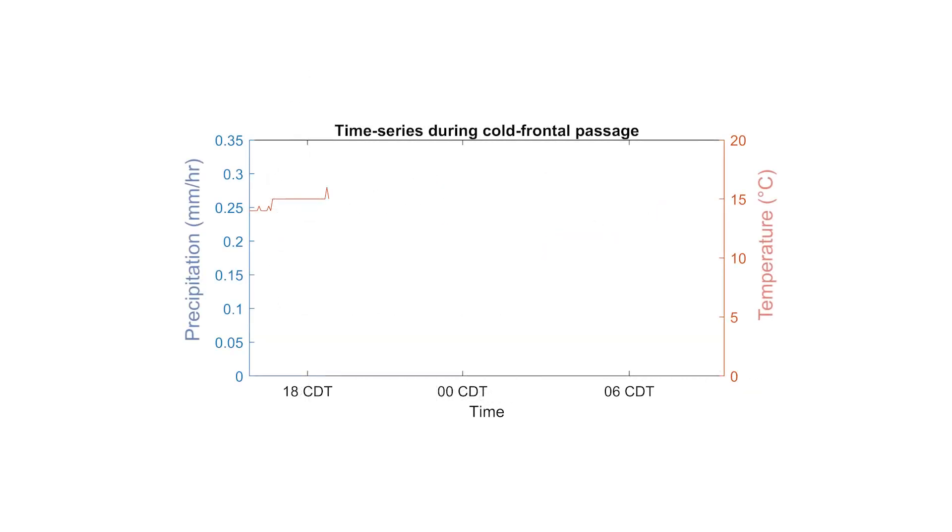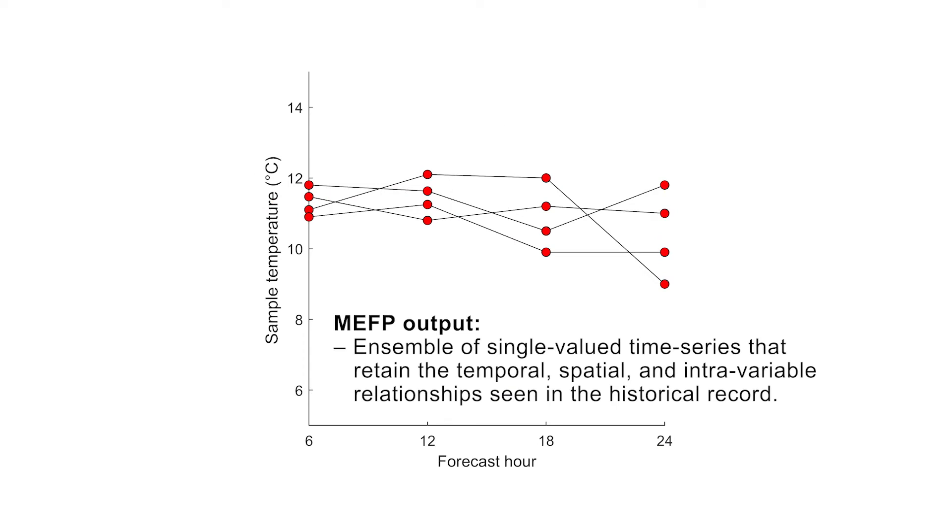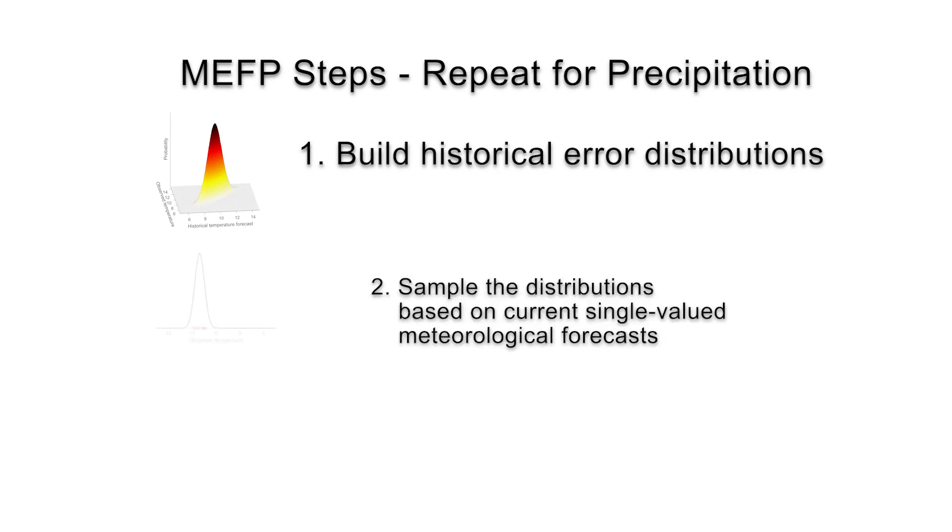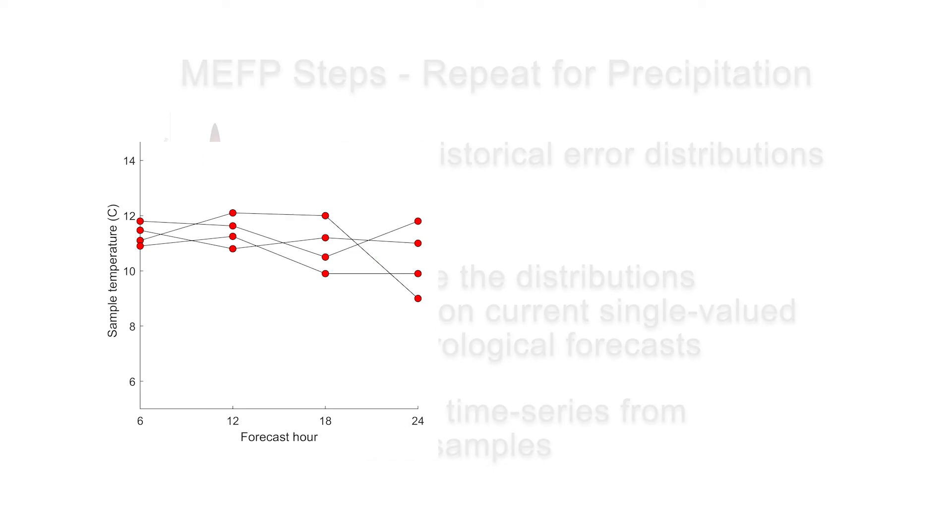Since the connections are informed by past historical patterns, they retain the physical relationships in time and space, as well as between temperature and precipitation that were observed in the past. The end product is an ensemble of single-valued time series that retain the temporal, spatial, and intravariable relationships seen in the historical record. Steps one through three are then repeated for precipitation to produce ensembles of temperature and precipitation time series.